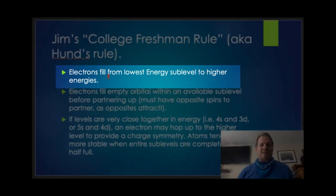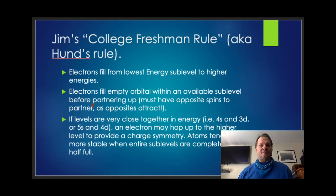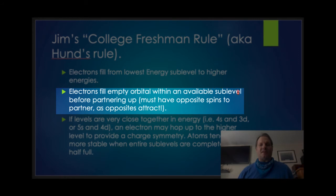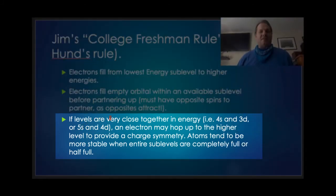So, you'll go to the lowest floor first. Try to get your own room. If you can't get your own room, you'll partner up. Once everyone's partnered, you have to go to the higher energy level. You have to go up a floor. So, let's take a look at that. Electrons fill from lowest energy sublevel to higher energies. Electrons fill empty orbitals within all available sublevels before they partner up. And there's something called a spin we will talk about, but they have to be spinning in opposite ways before they partner. And if levels are very close together in energy, like the 4s and the 3d are, or the 5s and the 4d, an electron may hop up to a higher energy level to produce charge symmetry. So, they're all the same. I'll show that example in a bit. Atoms tend to be more stable when the entire sublevels are completely full or half full.